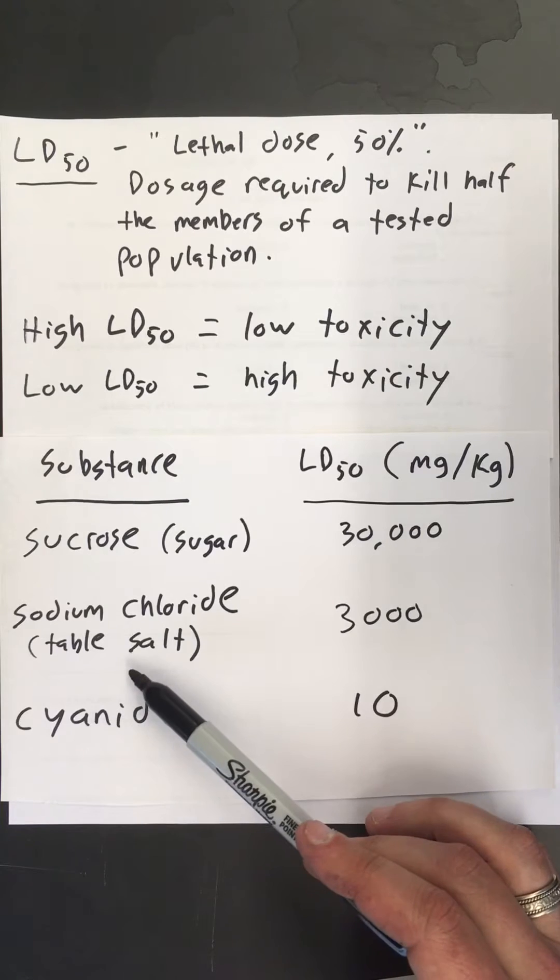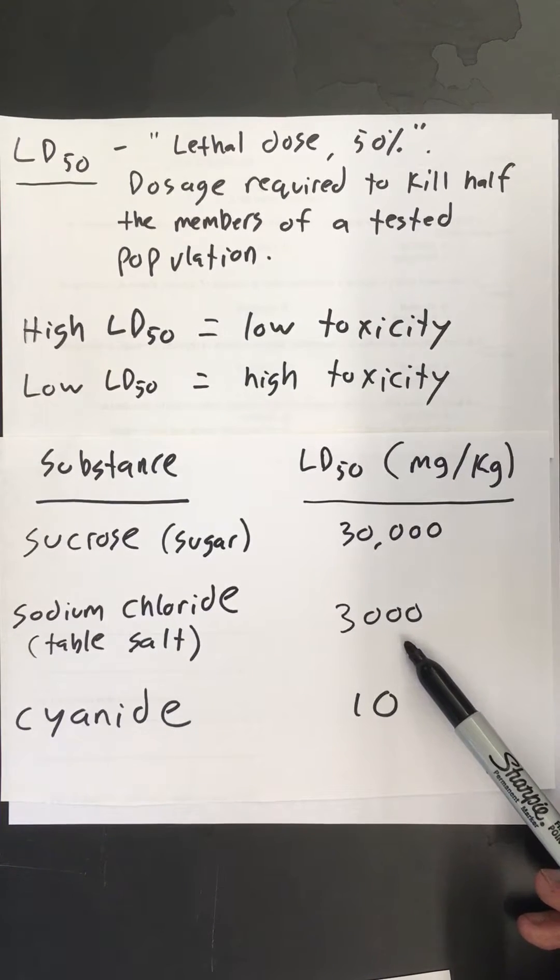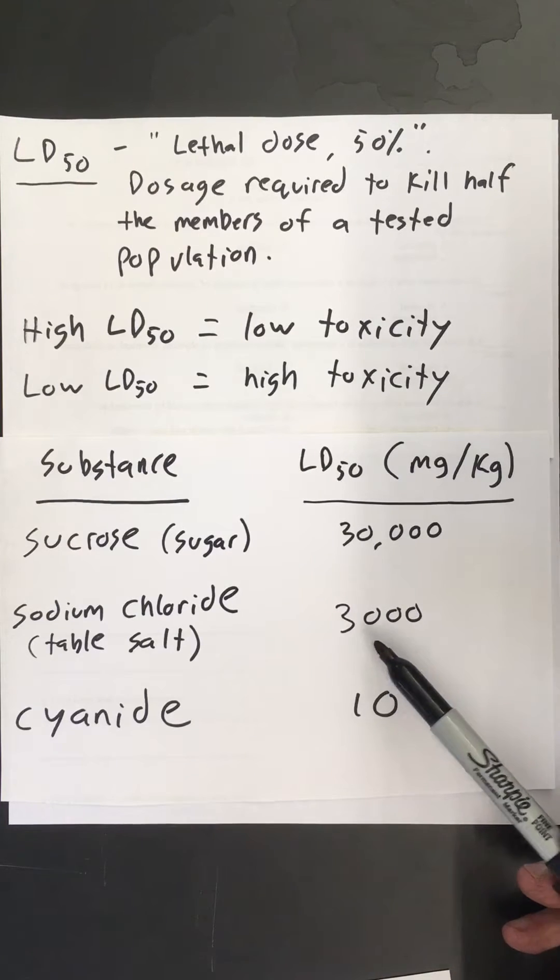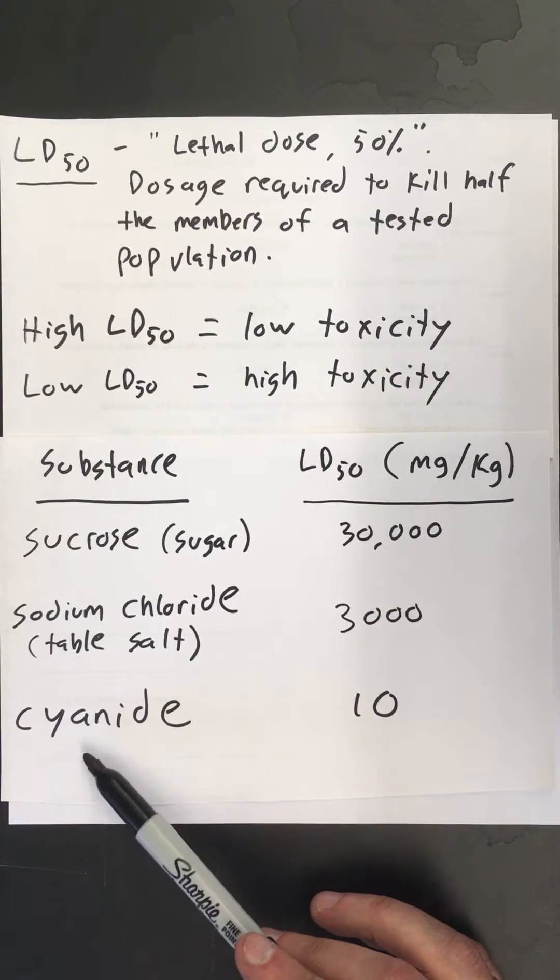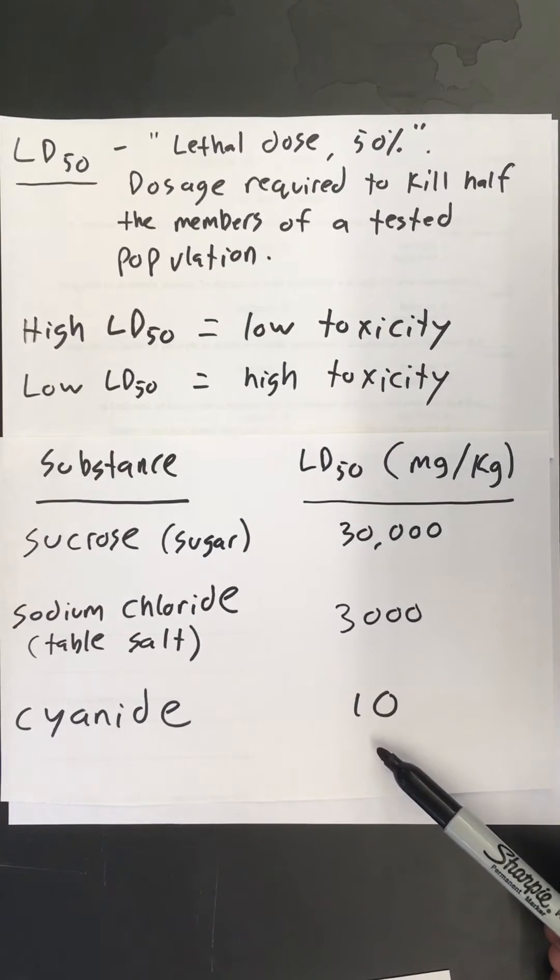Sodium chloride, table salt, has a lower LD50 of 3,000 milligrams per kilogram. That means it's a little more toxic. And then cyanide, which is a pretty dangerous substance, has a very low LD50. That means it would not take much cyanide at all to kill you.